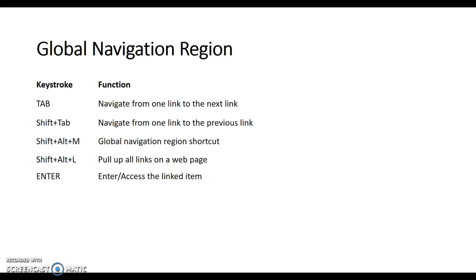Again, the keystrokes used in this portion of the tutorial include Tab, Shift-Tab, Shift-Aught-L, and Enter, but now we have the addition of Shift-Aught-M, which is the keystroke used to get to the Global Navigation Region shortcut.